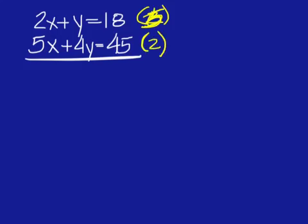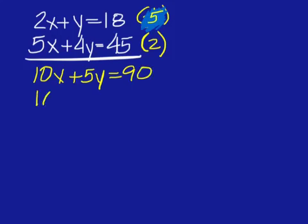My mistake. And that looks so bad I just want to erase it. I'm just going to write over it and do it again. Multiplying the top by 5, now we'll have 10x plus 5y equals 90 and then on the bottom 10x plus 8y equals 90.